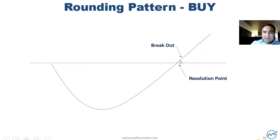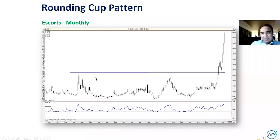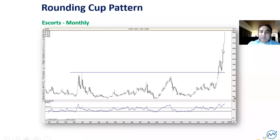Here is a multiple cup pattern - JSW Steel, you can see a multi-year cup. And here is Escorts - look at this, from 2008 to 2016, a roughly 10-year cup. Then it breaks out and goes like a rocket. If you get one stock like this, and that stock happens to be in futures and derivatives, you are sorted for the year.